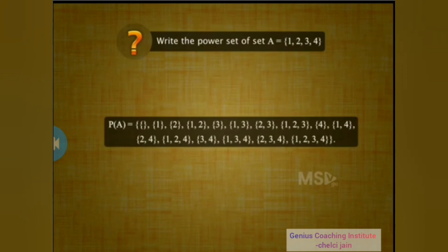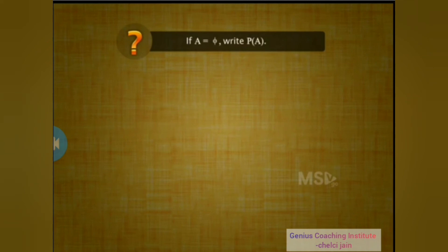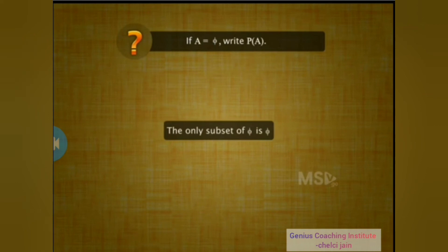Let's list down all the subsets. First we write the set with no elements, then we include sets with 1 element, then 2 elements, then 3 elements, and finally all 4 elements. We must note that φ, the empty set, is the subset of all sets; however, in the case of the power set, it is an element. The power set of a null set has only one subset, which is itself the empty set.